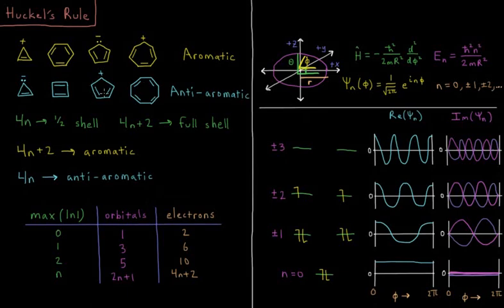We also have cyclooctotetraene. For anti-aromatic, we have the cyclopentadienyl cation, cyclobutadienyl is anti-aromatic as well, as would be the cyclopropenyl anion.